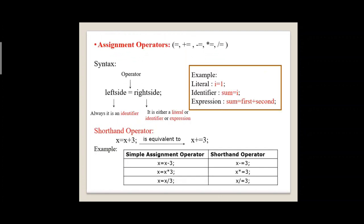Assignment operator: equal is the assignment operator, used to assign a value to a variable. The syntax is: left side equals right side, where the left side is an identifier and the right side is either a literal, identifier, or expression. For example, i = 1 assigns the literal value 1 to variable i; or one identifier assigned to another; or an expression assigned to the variable sum.